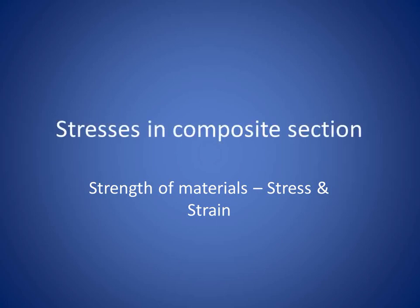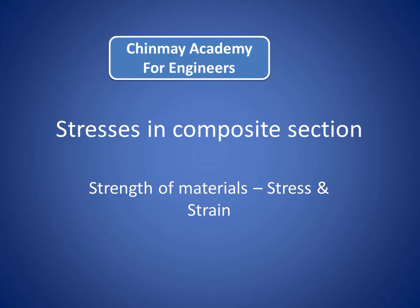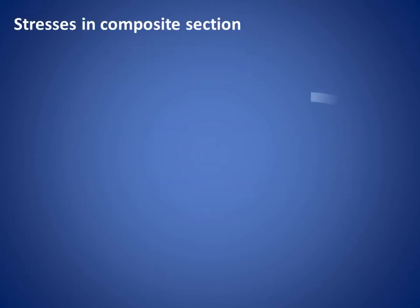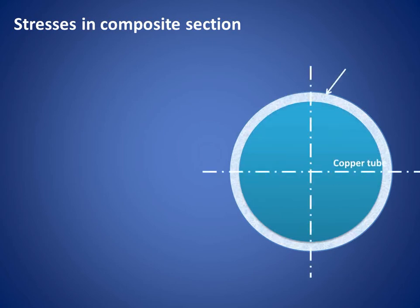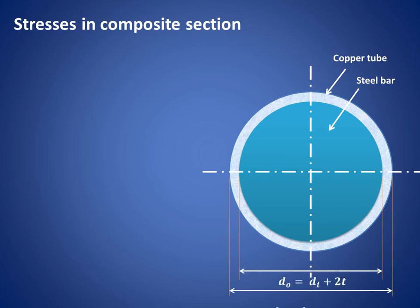In this video we will try to understand how to find out stresses in a composite section. Let us consider a hollow copper tube and a solid steel bar as shown. The outer diameter of the copper tube is DO as indicated, and the inside diameter is DI. This inside diameter is the same as the external diameter of the steel bar, so DI is equal to D.